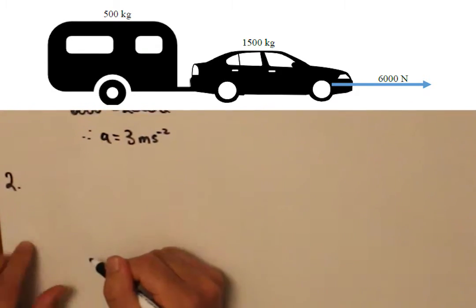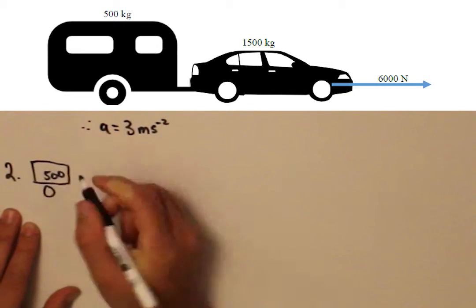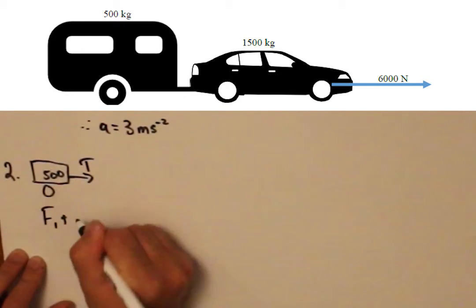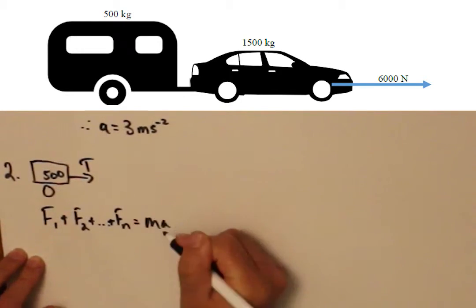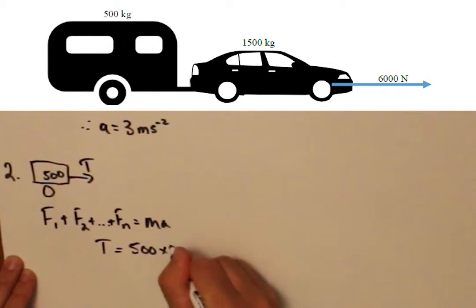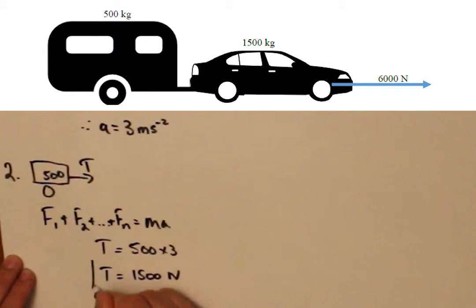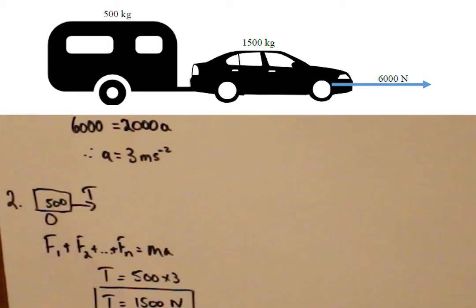Step number two requires us to isolate the caravan and consider the forces acting on it. Since the only contributing force is the tension force, which must be equal to Ma, 500 multiplied by 3, we get 1500N.